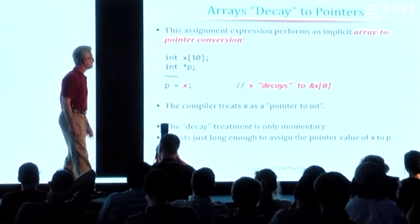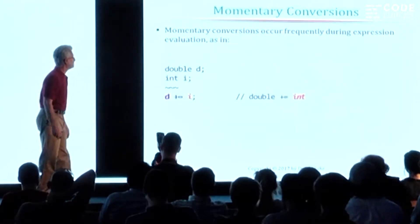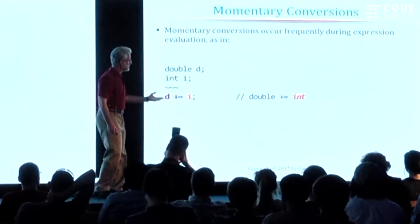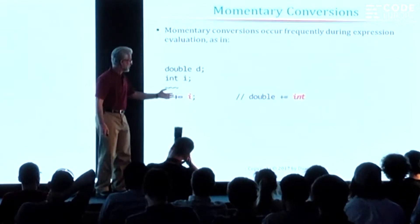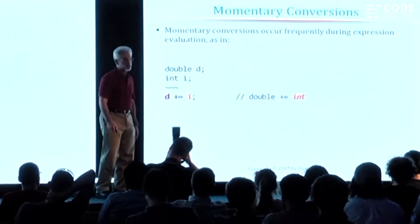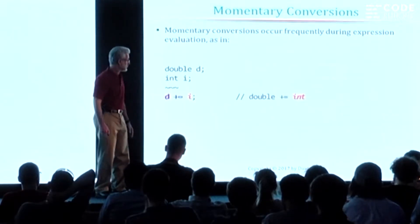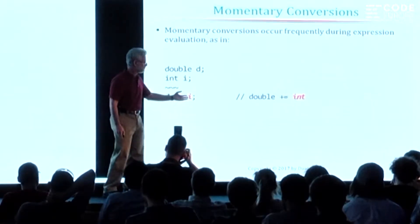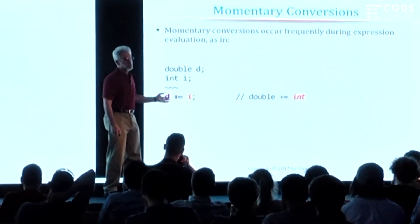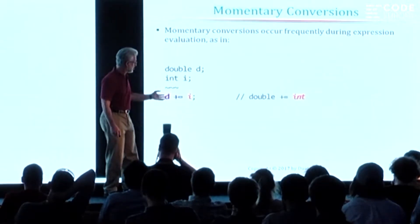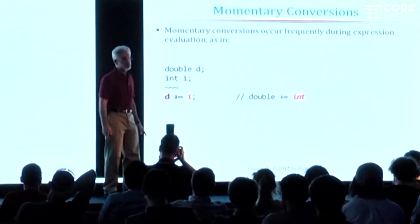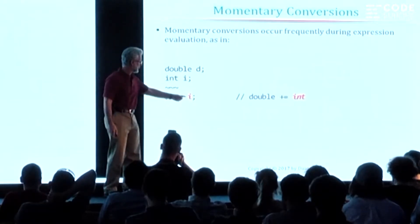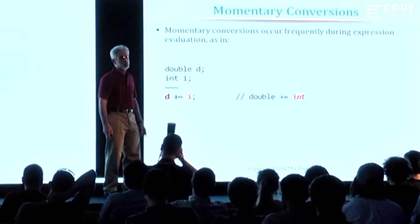The decay happens just enough to make this evaluation happen, and then X remains an array. That's its true nature. Now, let's make a comparison. This is something else that one does in C and C++ quite commonly, which is the ability to mix operands of different types in a given arithmetic expression — like adding an integer to a double.